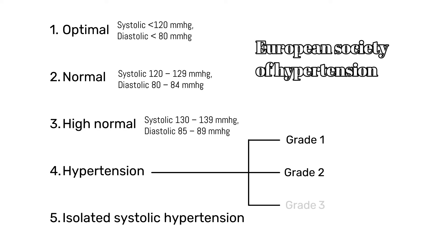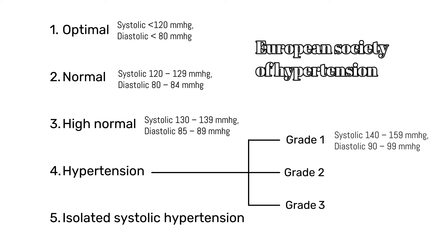They have subdivided hypertension into three further categories: grade 1, grade 2, and grade 3 hypertension. A systolic blood pressure between 140 to 159 millimeters of mercury and diastolic blood pressure between 90 to 99 millimeters of mercury is called hypertension grade 1. A systolic blood pressure between 160 to 179 millimeters of mercury and diastolic blood pressure between 100 to 109 millimeters of mercury is called hypertension grade 2. A systolic blood pressure above 180 millimeters of mercury and diastolic blood pressure above 110 millimeters of mercury is called hypertension grade 3.